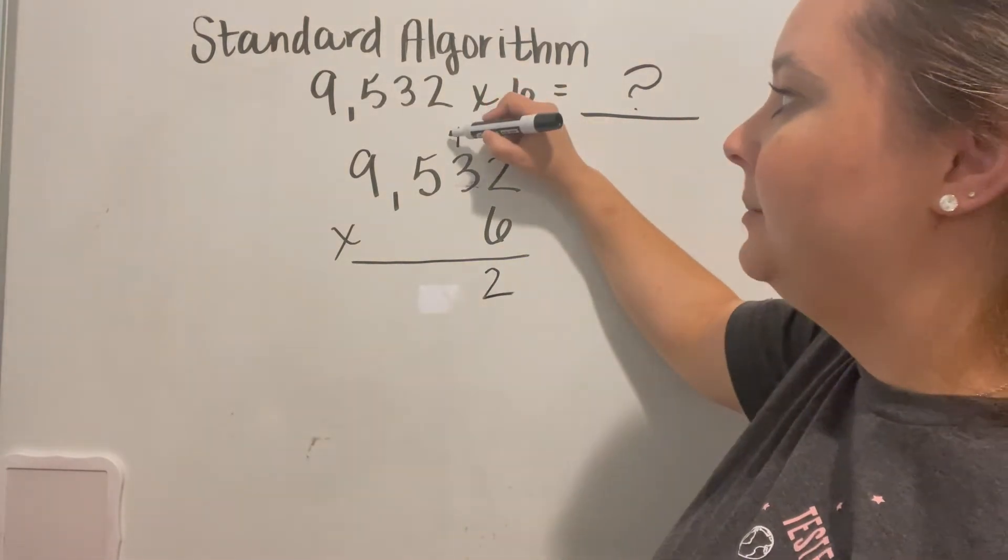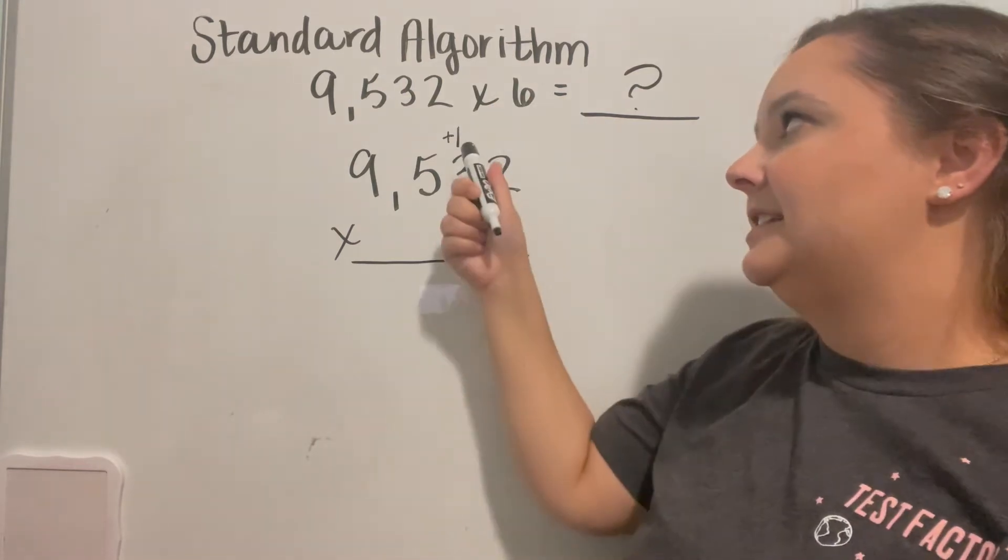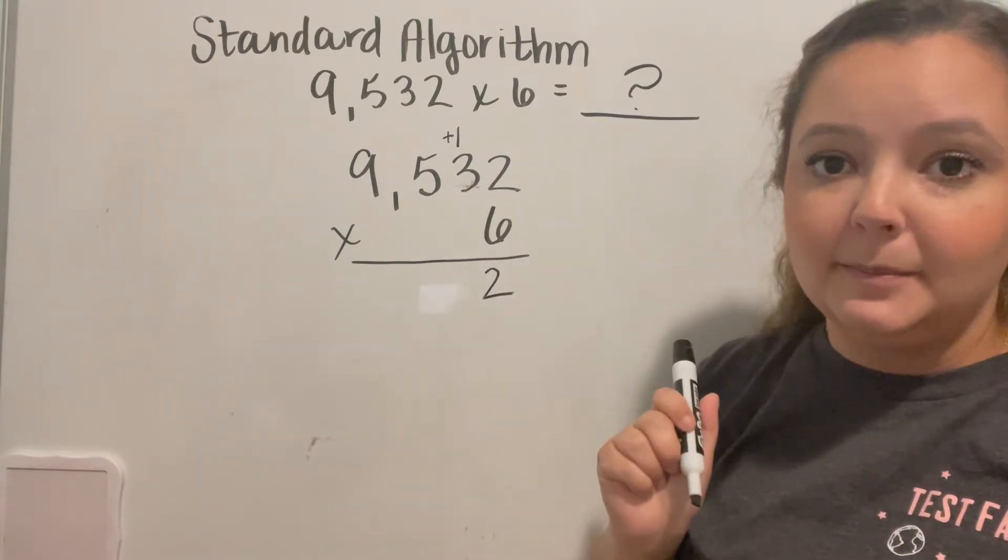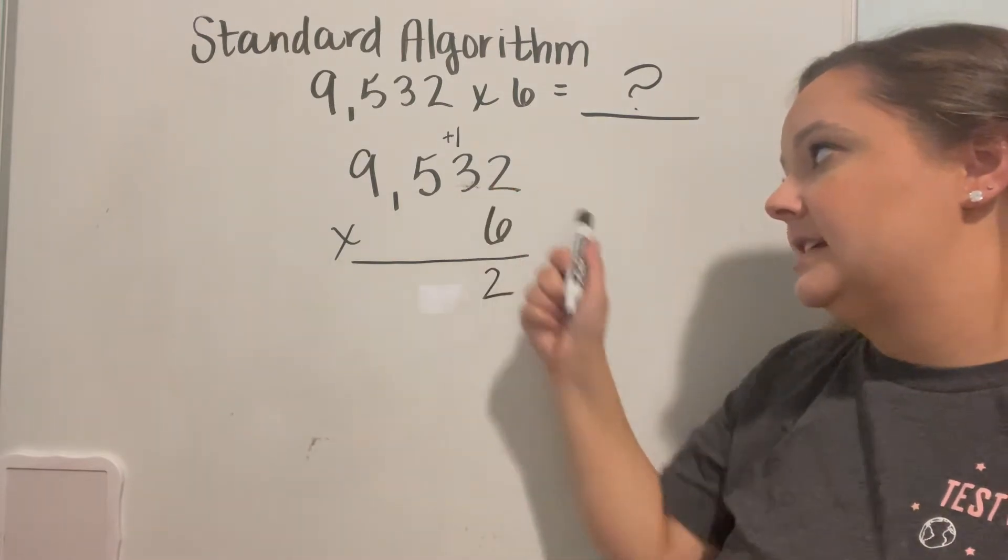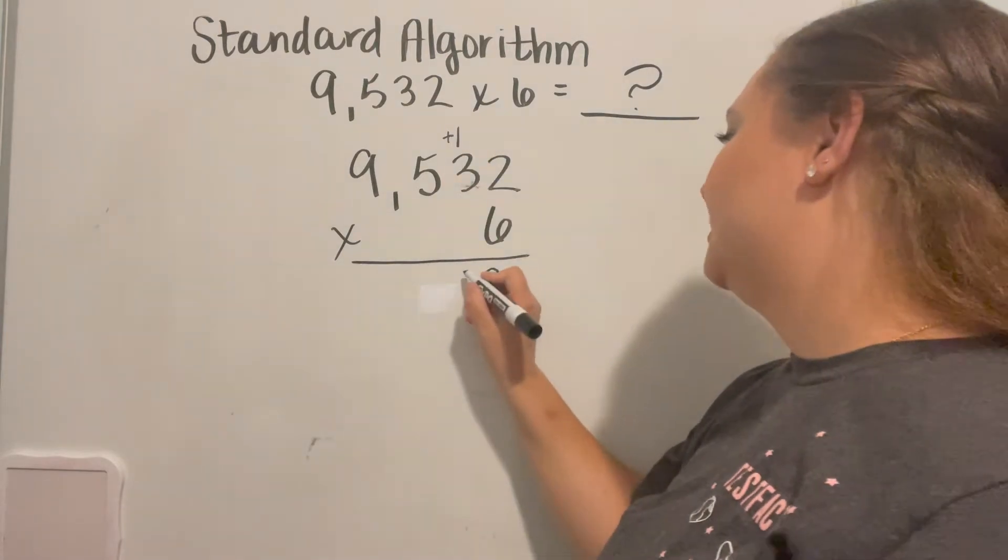And I'm going to carry my 1. My 1 that I put on top, I'm going to put a little plus sign next to it so that I remember I need to add that 1 to whatever the product of that next column is. So we have 3 times 6, which gives me 18, and now I'm going to add my 1 for 19.